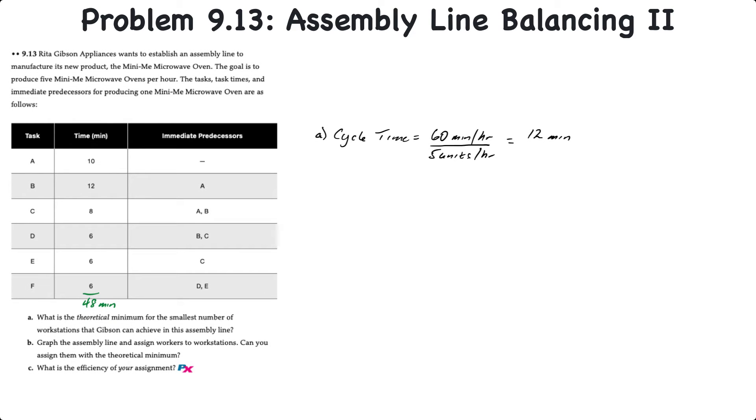So let's start with requirement A to determine the theoretical minimum number of workstations. Well, before we do that, we actually need to calculate the cycle time. The cycle time is equal to the time available, which in this case is going to be 60 minutes per hour. And we divide that by the number of units that are required per hour, in this case 5 units. This gives us a cycle time of 12 minutes.